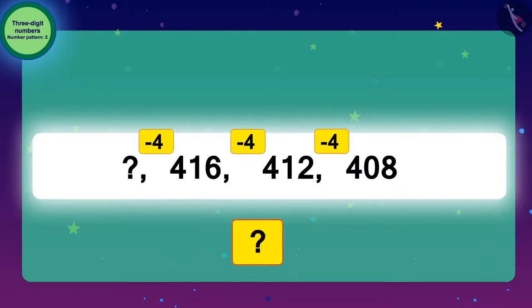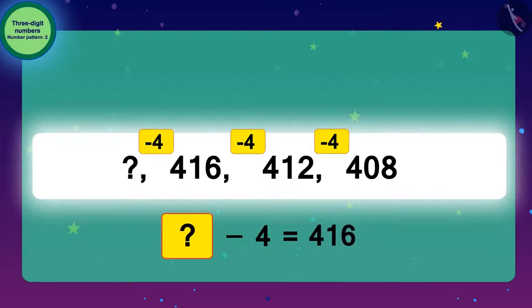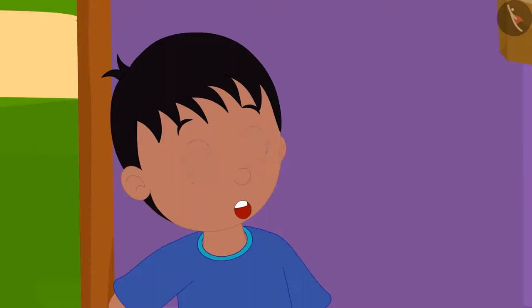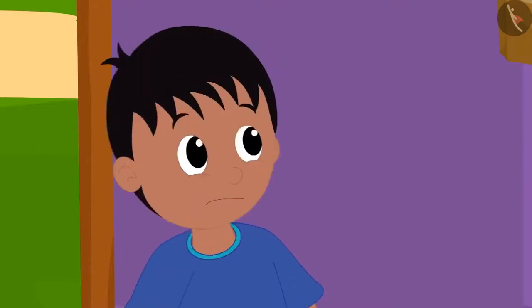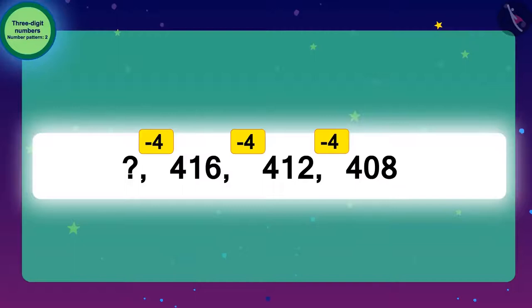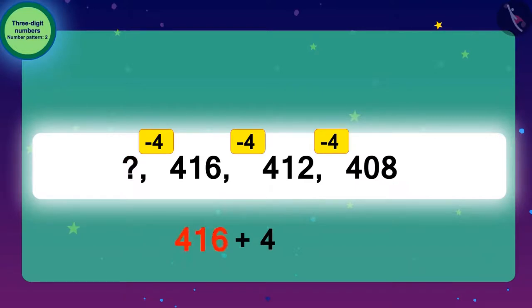Now, can you find the number which will result in 416 on subtracting 4 from it? If we add 4 to 416, then we will easily find the first number of this pattern. So, the answer to our code is: add 4 to 416, that is 420.